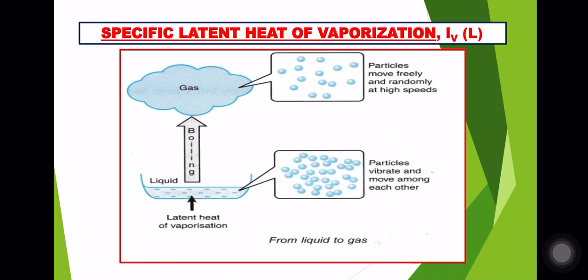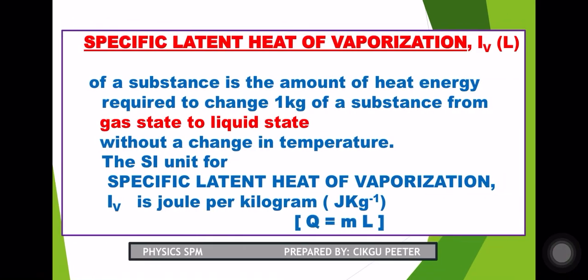From the diagram, latent heat of vaporization is the energy needed by 1 kg of liquid water to change its state to gas. So 2.26 million joules per kg is the amount of energy needed for every 1 kg of liquid water to boil completely and turn to gas. Equally, when 1 kg of steam or vapor undergoes condensation back to liquid, the same amount of energy is released. The energy involved is equal in both directions.